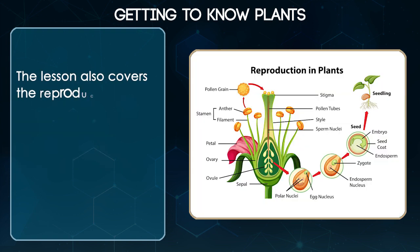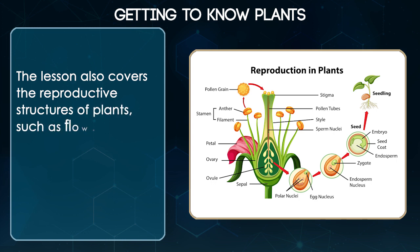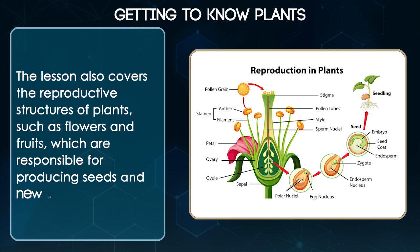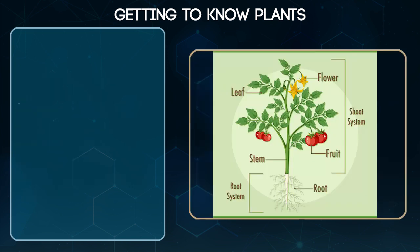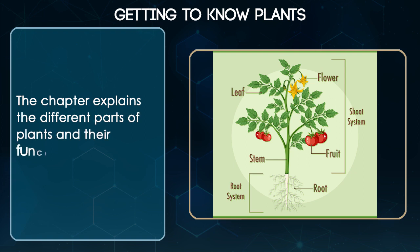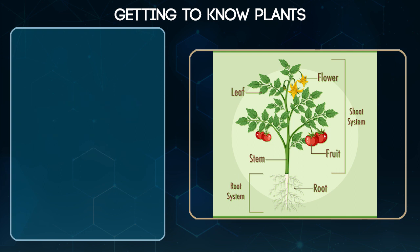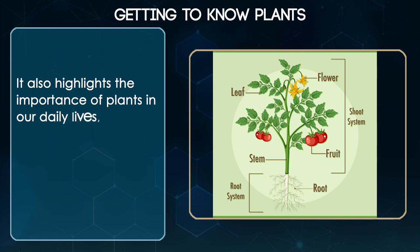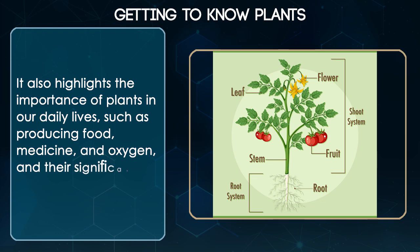The lesson also covers the reproductive structures of plants such as flowers and fruits, which are responsible for producing seeds and new plants. It also highlights the importance of plants in our daily lives such as producing food, medicine and oxygen, and their significance in the ecosystem.